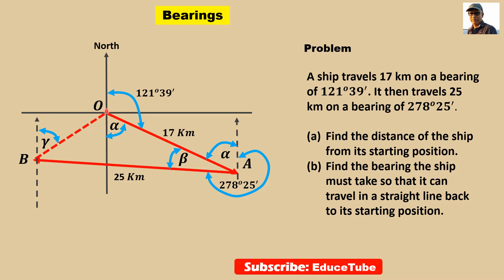So from the starting point to this point, we need to find this distance as well. If the ship travels in a straight line back to its starting position, what will be the bearing for this line BO? So we need to find these angles and this distance. Let's first find the distance.